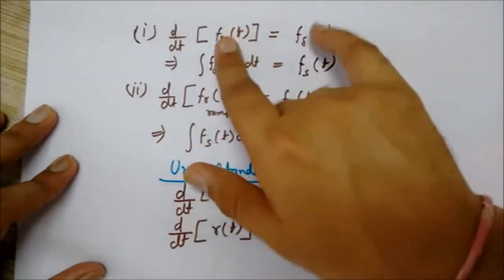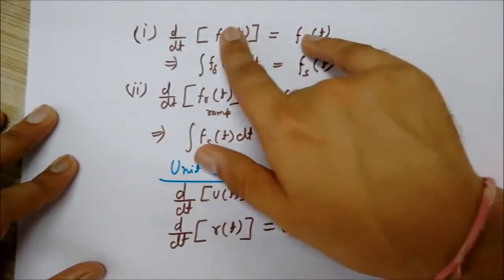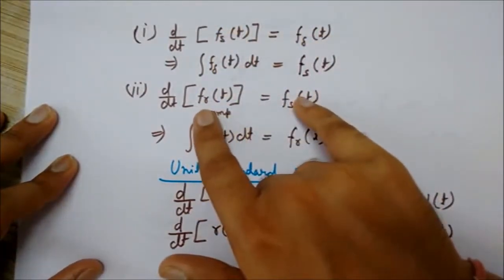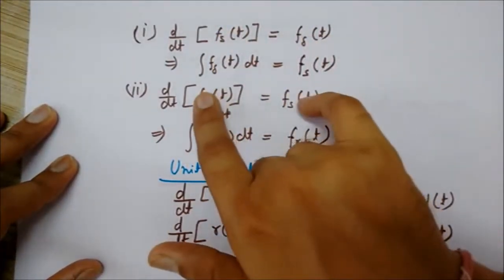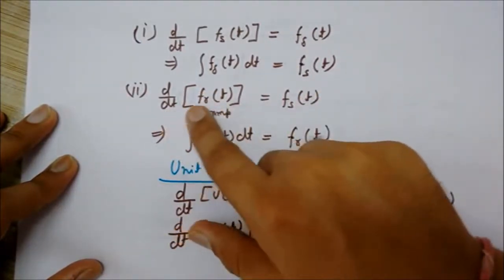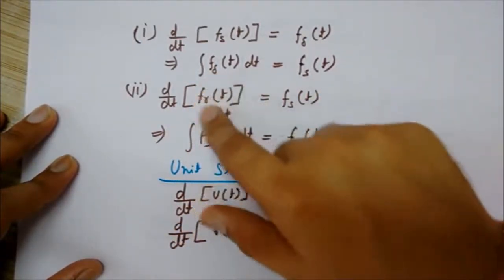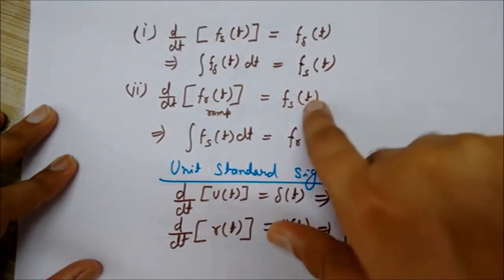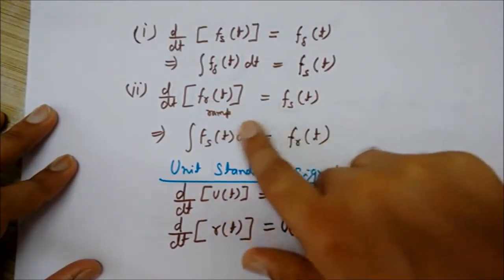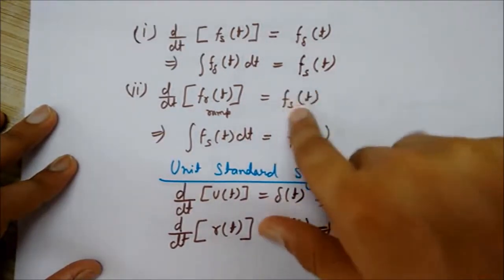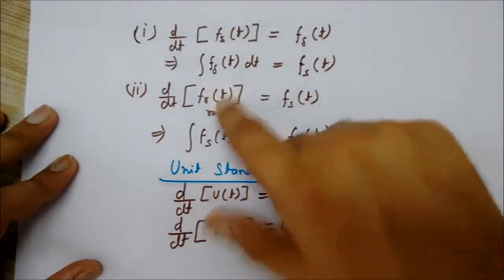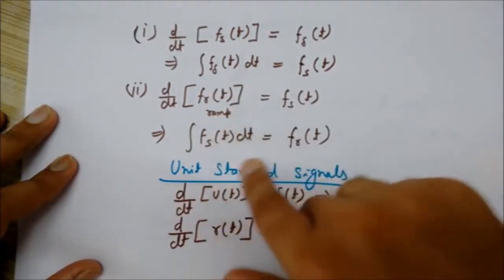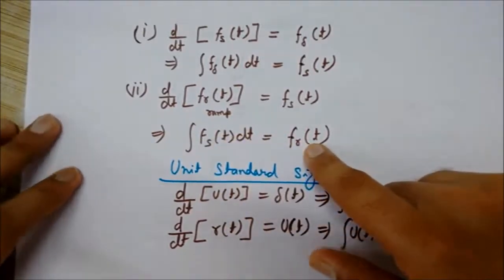Similarly, there is a relation between the impulse and step. Now here we will see the relationship between the ramp and step. So if I differentiate with respect to time the ramp signal, I will get the step signal. And in the reverse action, if I integrate this, I will get the ramp, integrated with respect to time, you will get the ramp signal back.